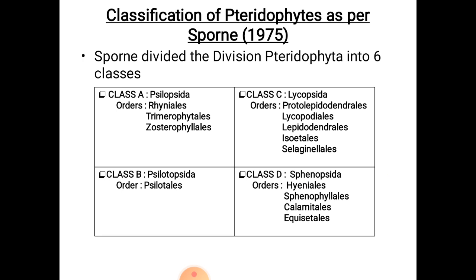Now let us know about the classification of pteridophytes as per Sporne. Sporne in 1975 divided the division Pteridophyta into 6 classes. Class A is the Psilopsida, which includes 3 orders: Rhyniales, Trimerophytales, and Zosterophyllales.